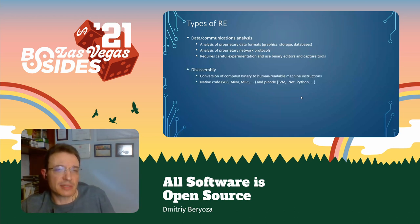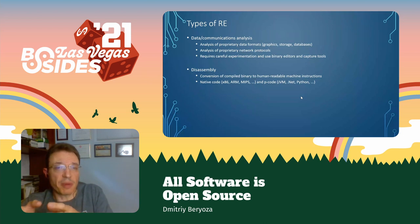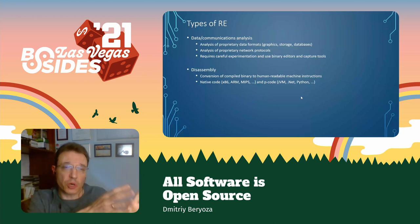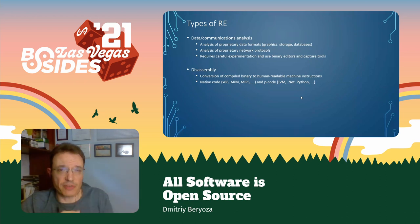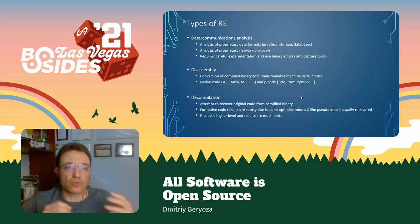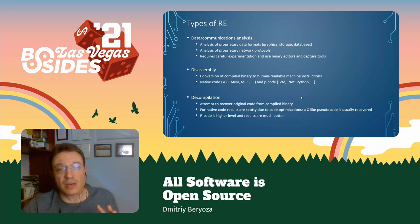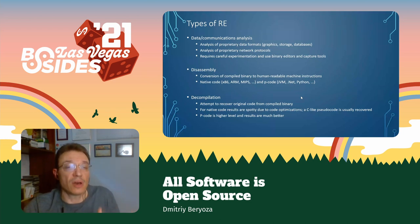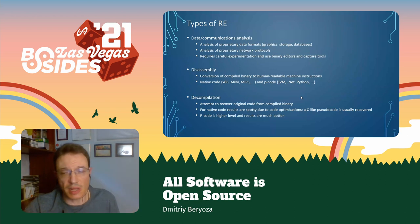The same goes for analysis of network protocols — it just requires patience, careful examination, and use of network capture tools and binary editors. Disassembly is the next step, where you actually have the executable code: you take the compiled binary and convert it into human-readable machine instructions. That can be done for native code and portable code such as what the JVM produces. And finally there is decompilation, where tools are smart enough to convert machine instructions into something close to original source code.